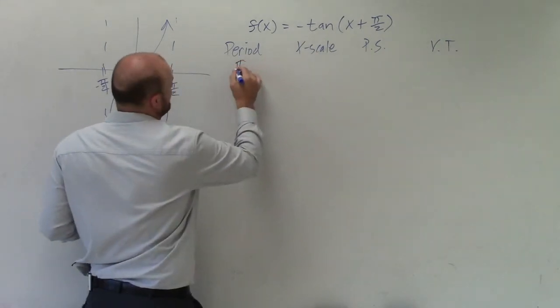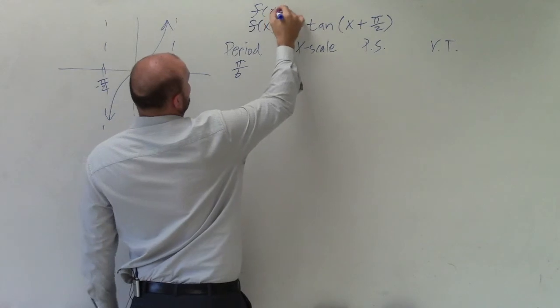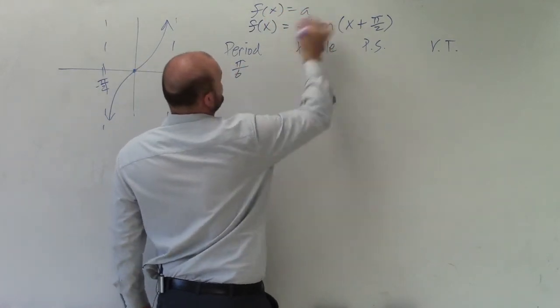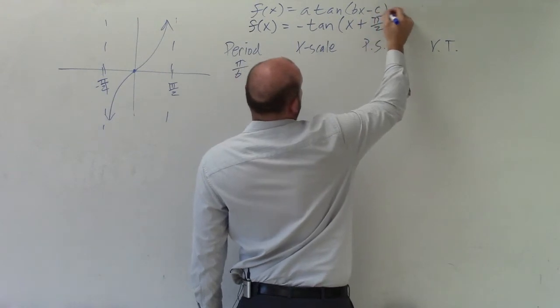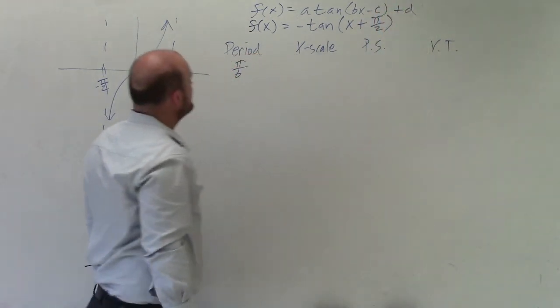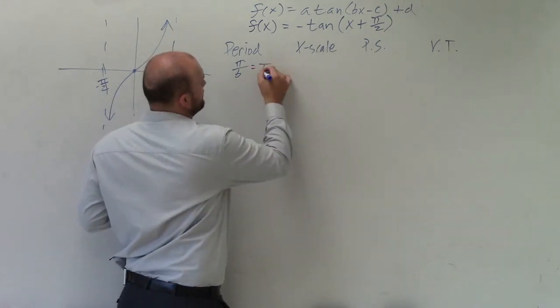So to determine the period, all we do is take pi divided by b. And you might say, well, what is b? I guess I didn't write that in there. So our general transformations for any trigonometric function is going to look like this. So b is just going to be the coefficient of x, which in this case was 1. So it's just going to be pi.